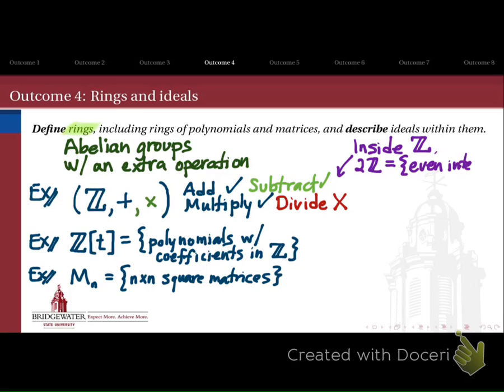Ideals are the sub-objects inside of rings that we care most about. For example, inside the ring of integers we can consider the set of all even integers as being an ideal sub-object inside that ring. We'll talk more about what that means in due time.